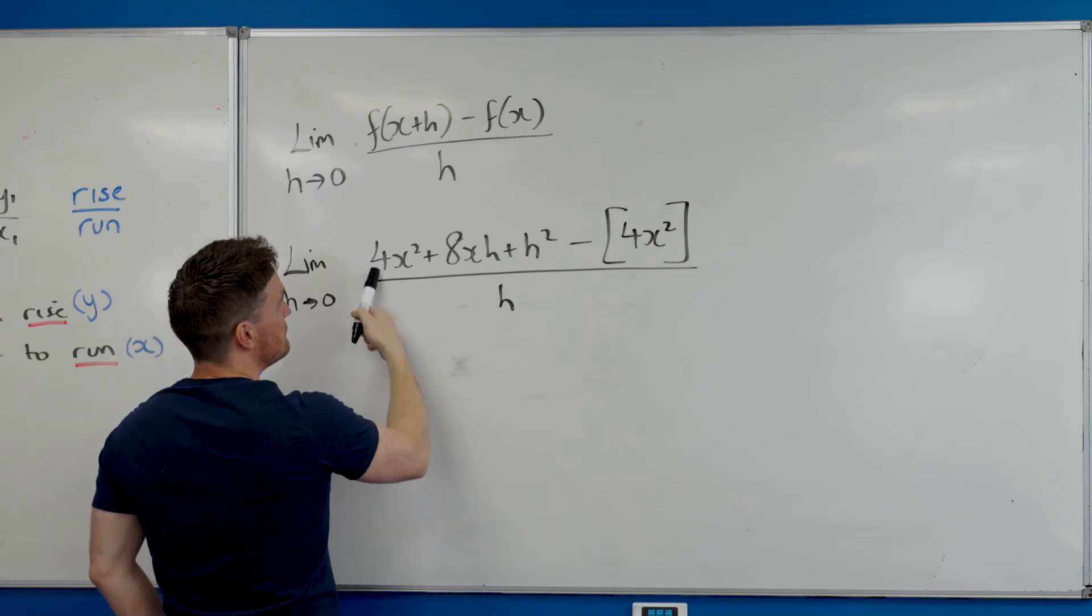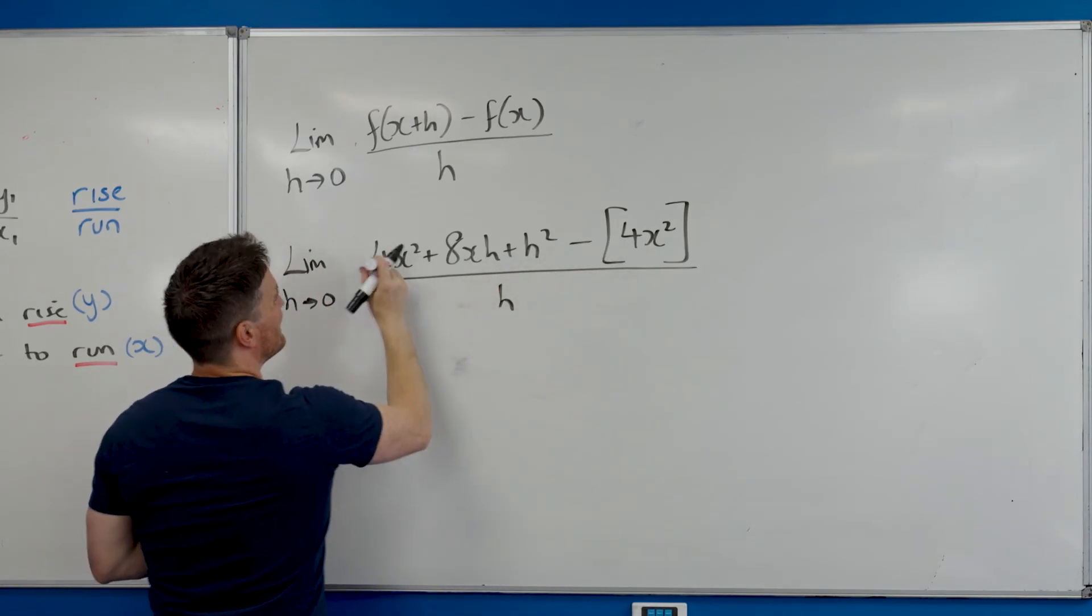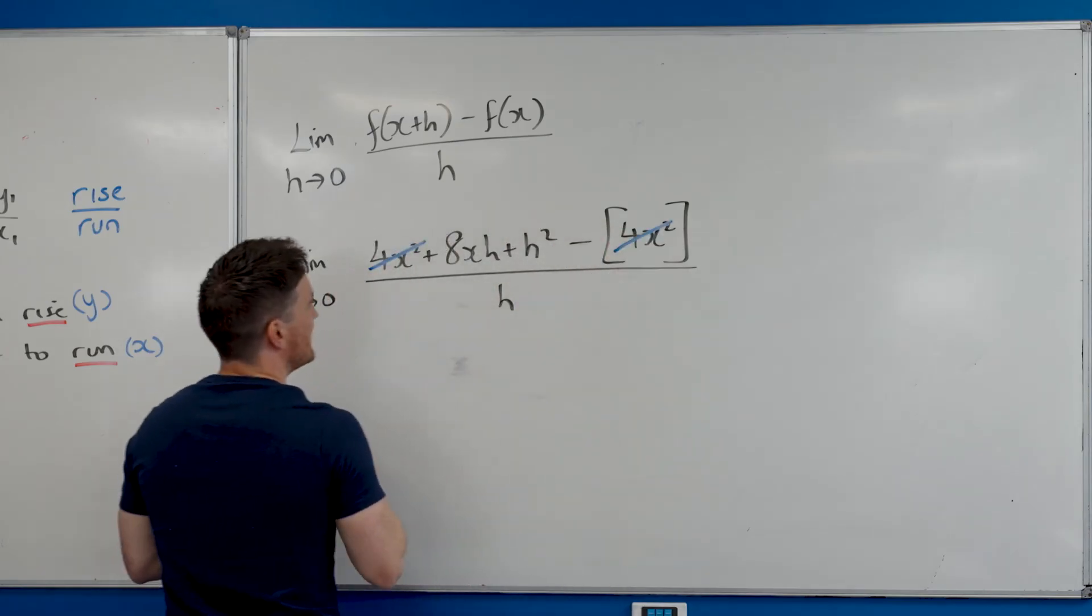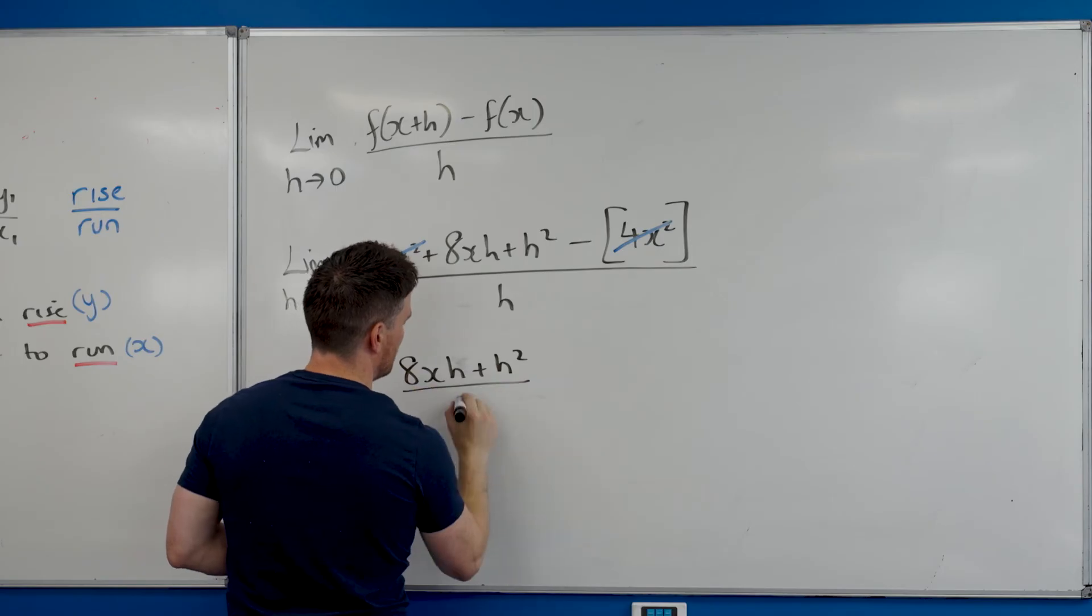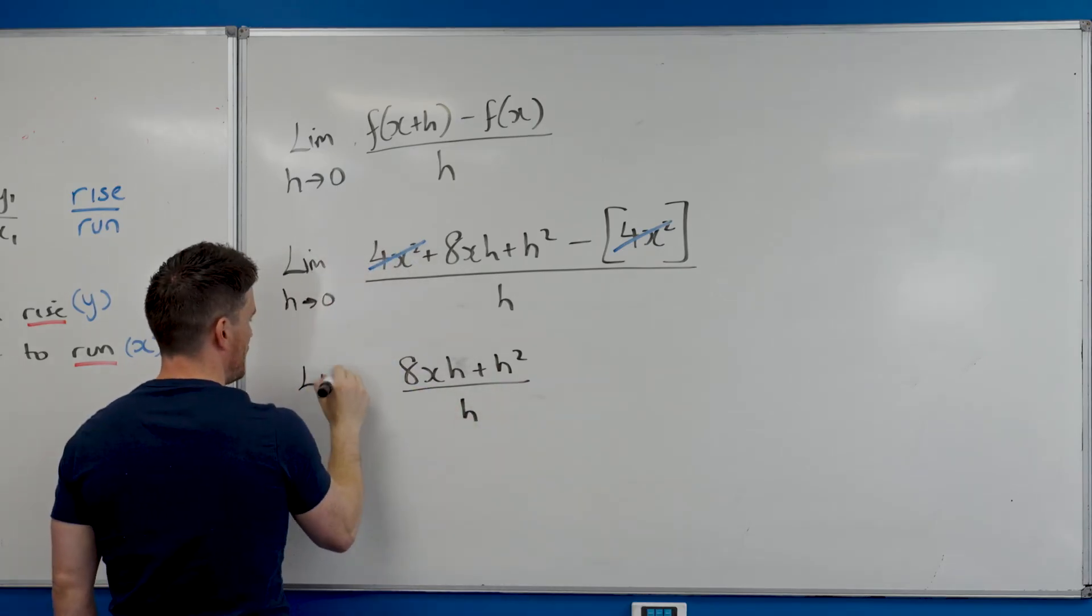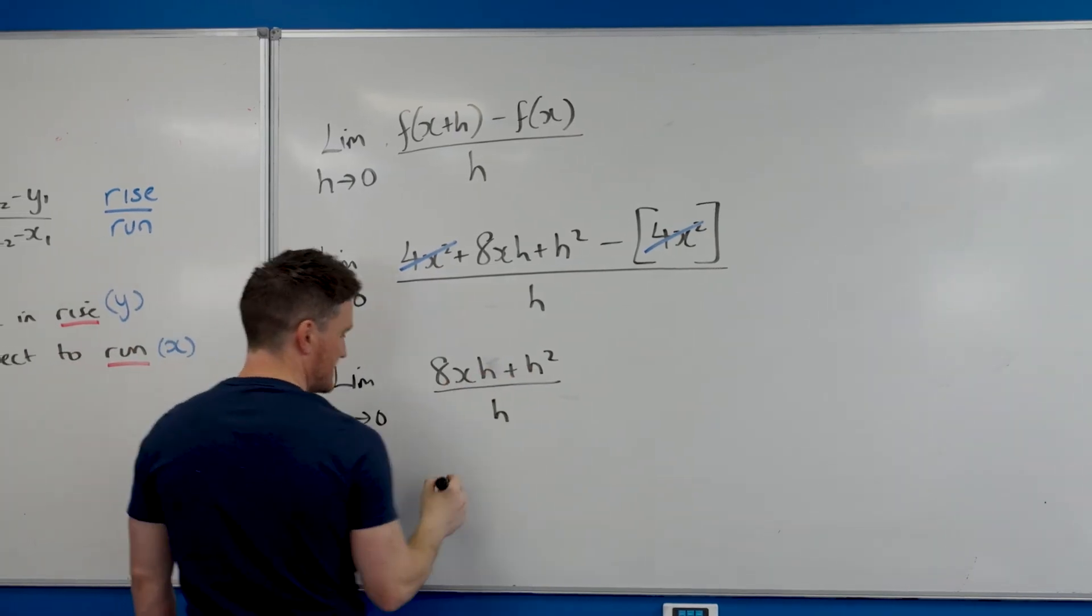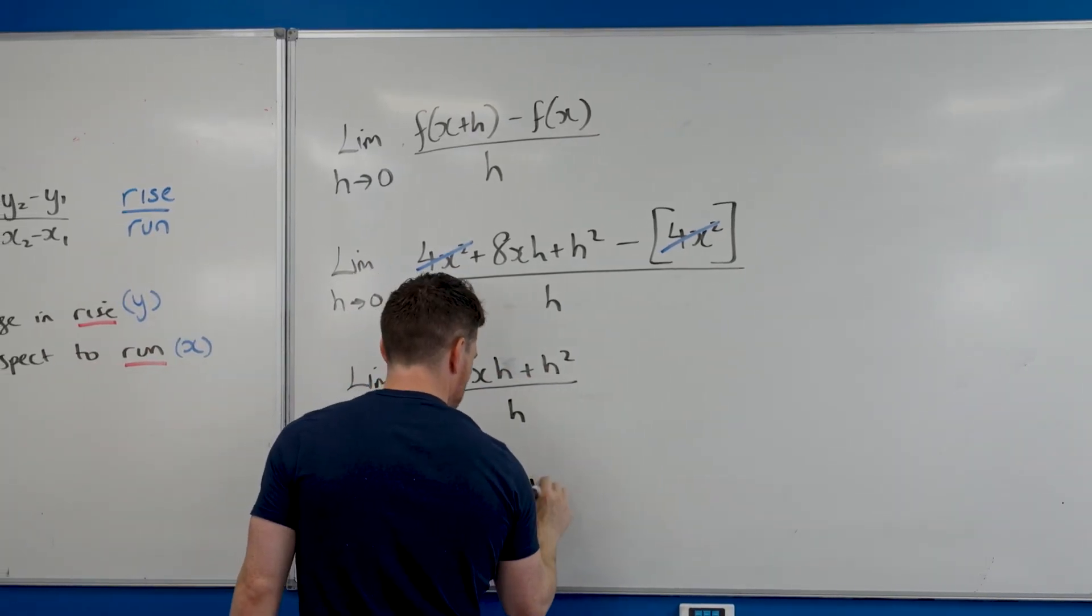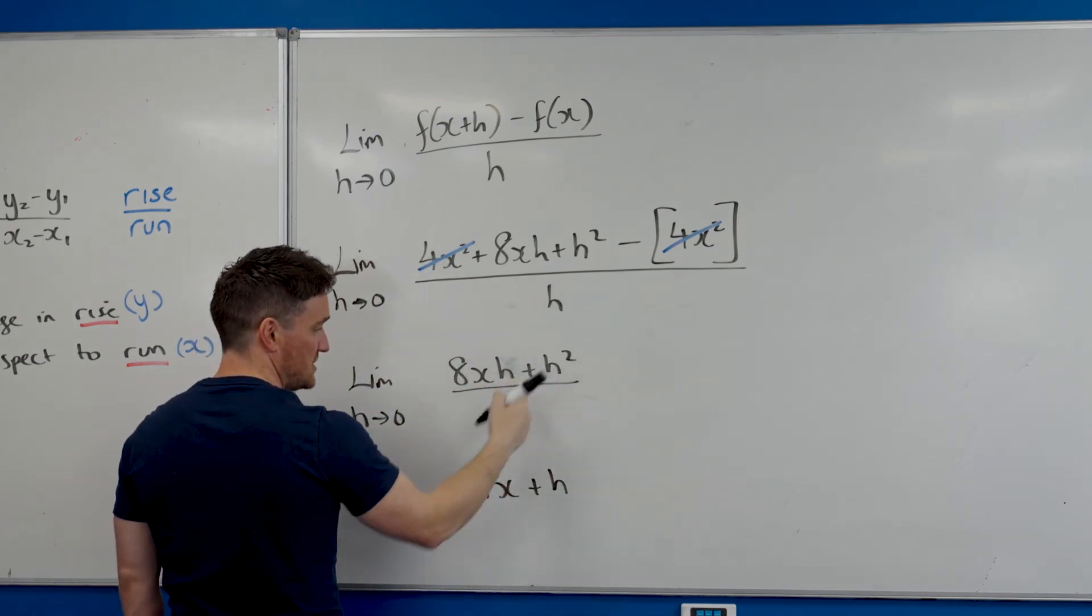So that whole bit was the bit that I took from that board over there. Minus f(x)—I like to put a big square bracket—minus f(x) was the original equation, 4x squared, all over h. Now your job is to clean up the top. 4x squared and minus 4x squared are going to cancel, so I get 8xh plus 4h squared all over h.